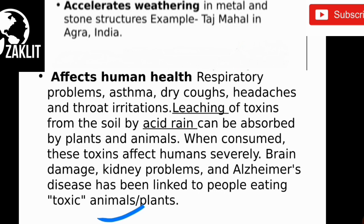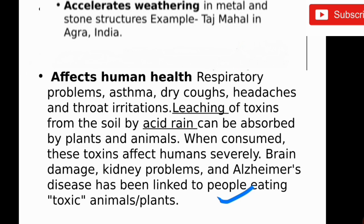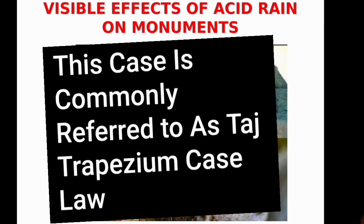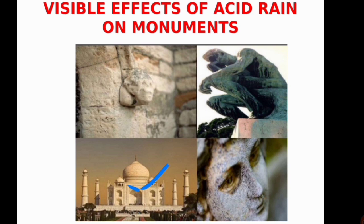When animals or plants are affected by acid rain and people consume them, they are also consuming harmful substances. Pictures show the visible effects of acid rain on monuments — whitening of monuments and the Taj Mahal's marble deteriorating day by day. A nearby factory was badly affecting the Taj Mahal, so after a petition was filed, the factory was moved, and now the Taj Mahal is somewhat safer.